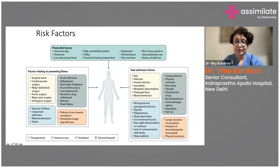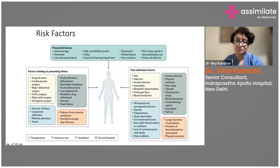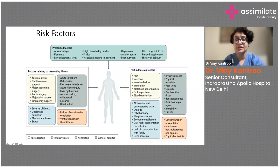Post-admission factors include pain — very important, as patients in pain are more prone to developing delirium. Nosocomial infections, invasive devices, immobility, metabolic abnormalities, prolonged ileus, and blood transfusions are also risk factors. Excessive opioid use — as distinct from adequate pain control, which itself helps prevent delirium — contributes as well. Polypharmacy is very common in the elderly, where drug interactions can precipitate delirium.